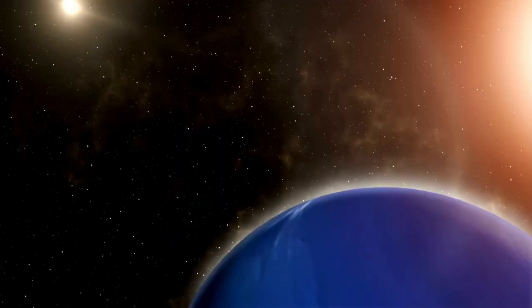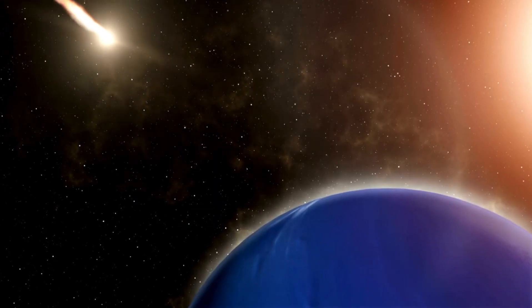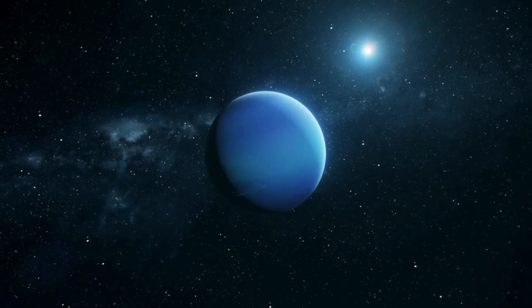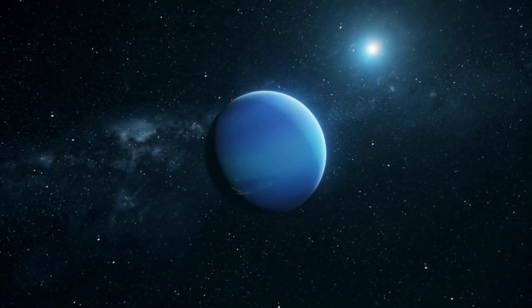Measured by diameter, Neptune is the fourth largest, the third most massive, and the densest planet in the solar system. It's about 17 times more massive than Earth and slightly more massive than its near twin, Uranus.